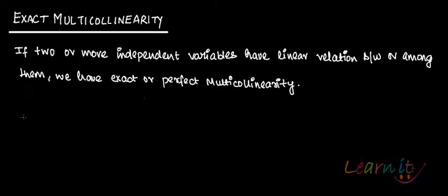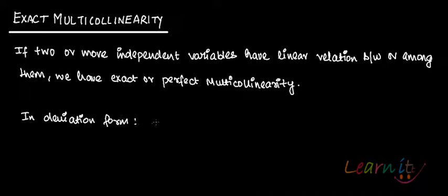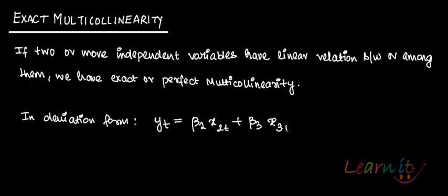So let us try to prove this. In deviation form, your multiple linear regression model could be written as lowercase y_t equals beta_2 x_{2t} plus beta_3 x_{3t}. If you have a problem understanding what this deviation form model is and how we derive it, I advise you to go back to one of the earlier recordings in which we have derived this.